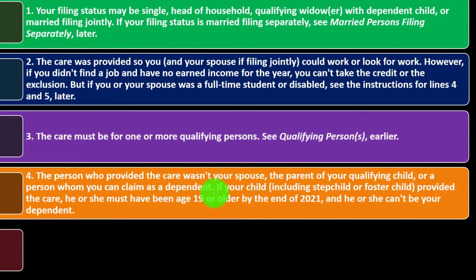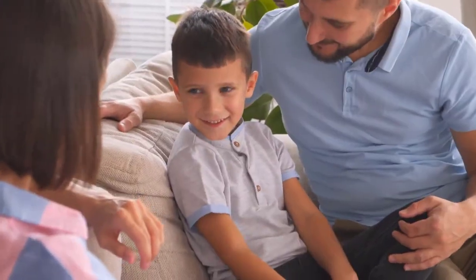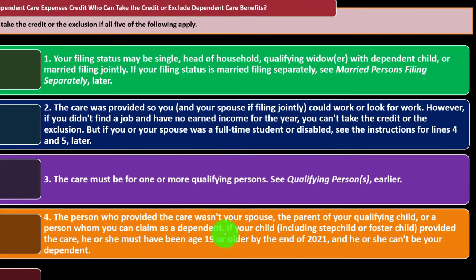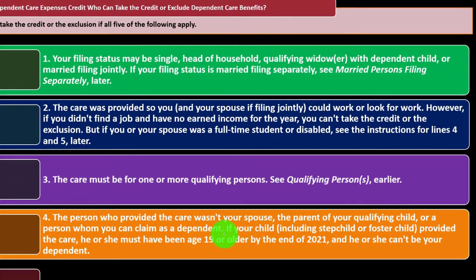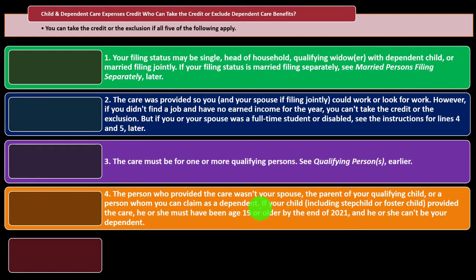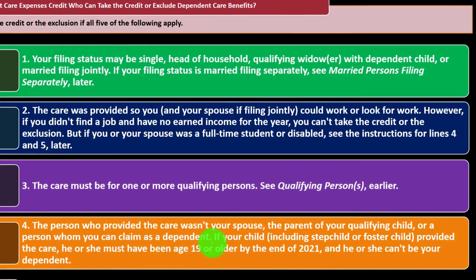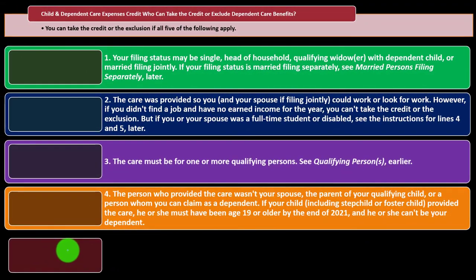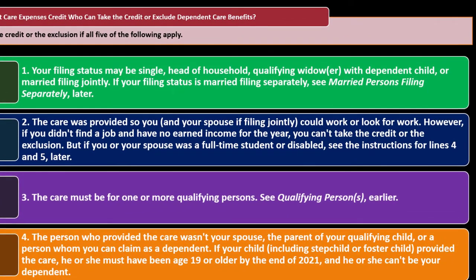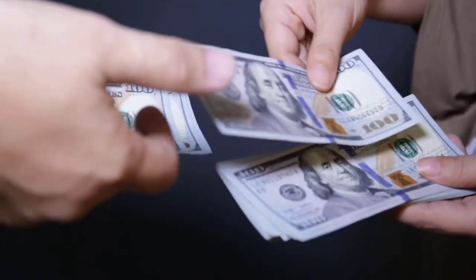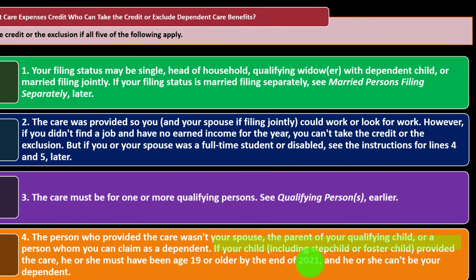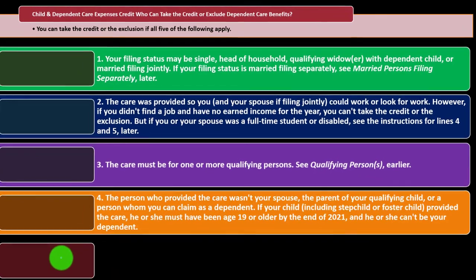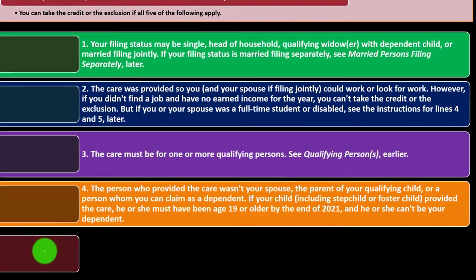You obviously cannot pay your spouse to take care of the child and claim a deduction. Similarly, you can't pay the other parent of the qualifying child — that would be their own responsibility. And you can't pay someone you claim as a dependent — such as another child — to care for another dependent and then receive a credit for those payments. If your child, including a stepchild or foster child, provided the care, they must have been age 19 or older by the end of 2021 and cannot be your dependent.